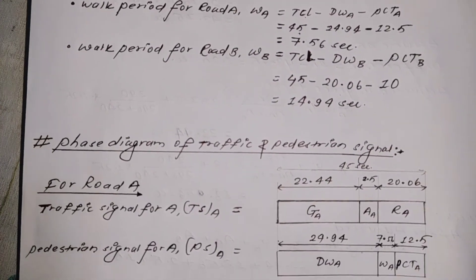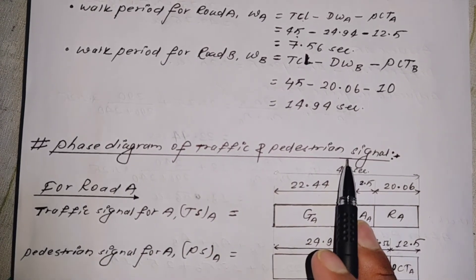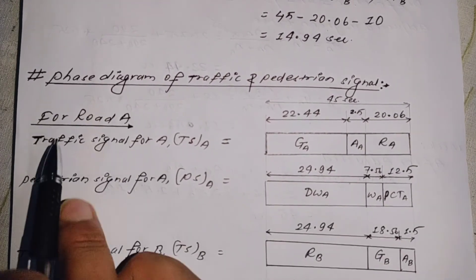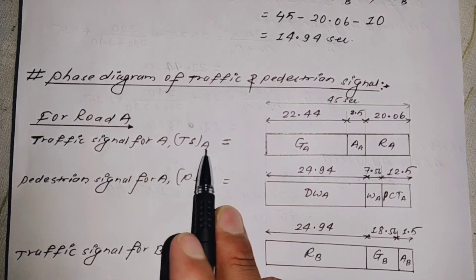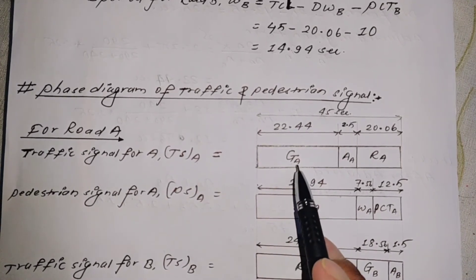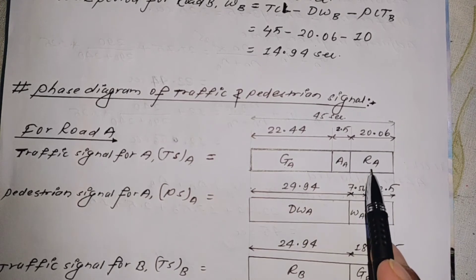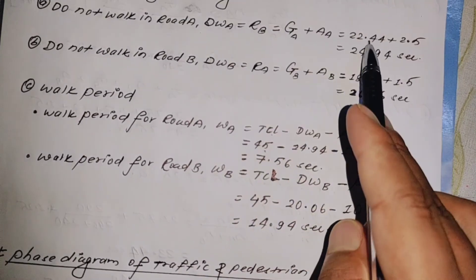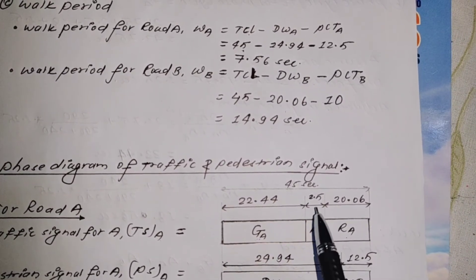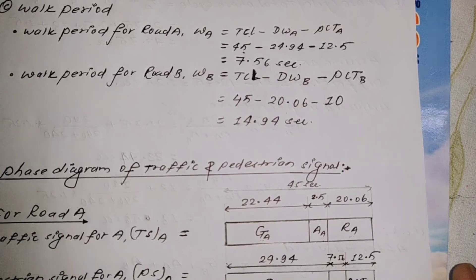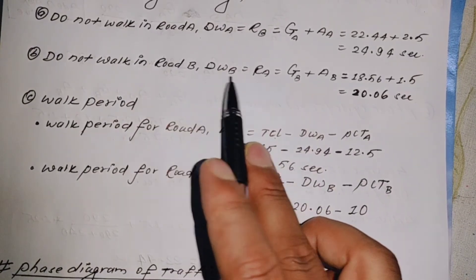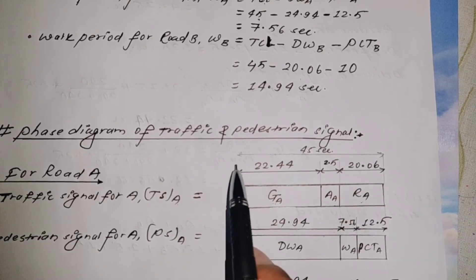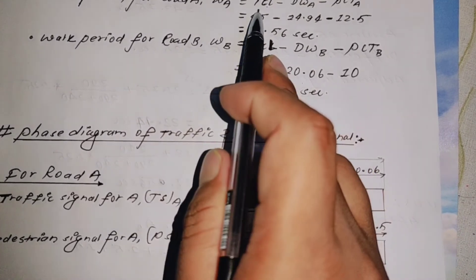Final point: phase diagram. We now draw the complete phase diagram of the traffic signal and pedestrian signal. Total cycle length is 45 seconds. For Road A traffic signal: green light, amber, then red.